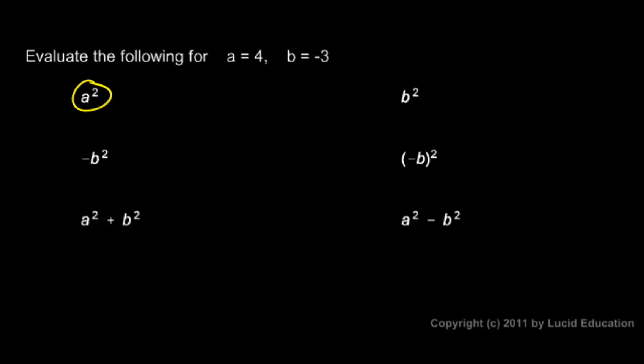First one: a squared. Well, a is 4, so 4 squared, that's simply 16. That was pretty easy. Now look at b squared. b is negative 3, so we have b squared, that's the same as negative 3 squared, and it's as if the negative 3 were in parentheses there. Negative 3 squared is negative 3 times negative 3, which is positive 9.